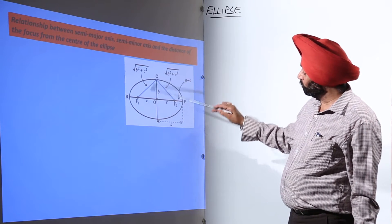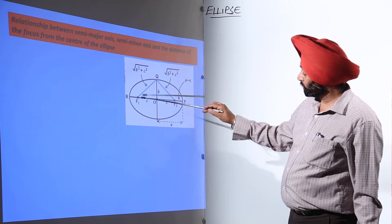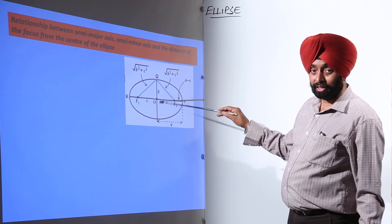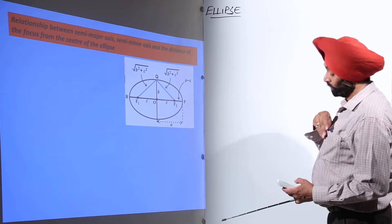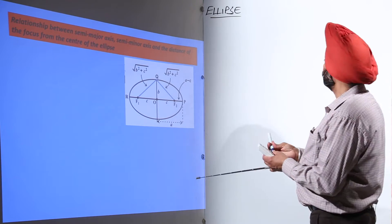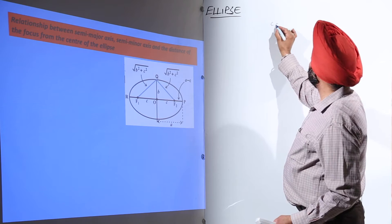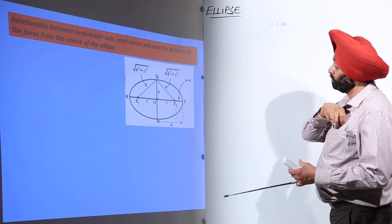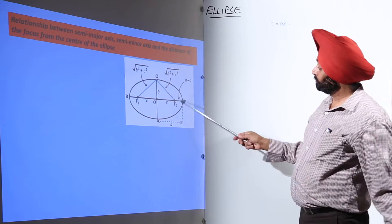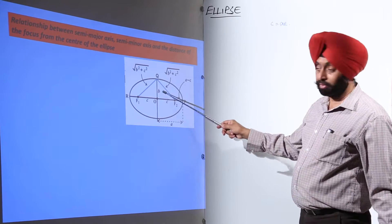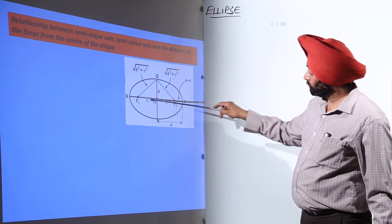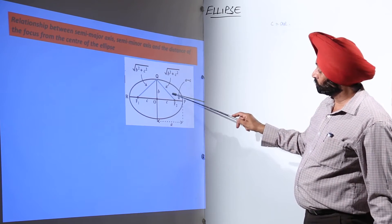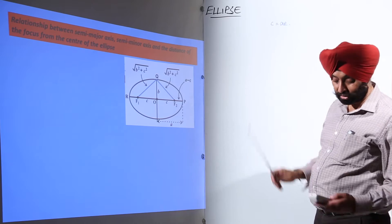We have taken a point Q. This forms a right angle triangle, and this distance is C. If you remember, C is equal to AE. So we are having this distance as C, this distance as B. In a right angle triangle, this becomes the square root of B squared plus C squared, so this becomes B squared plus C squared. Is it clear?